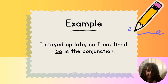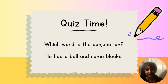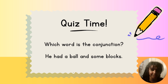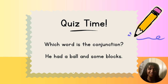All right, let's do a little review. Which word is the conjunction in this sentence: 'He had a ball and some blocks'? If you said the word 'and,' you are correct!